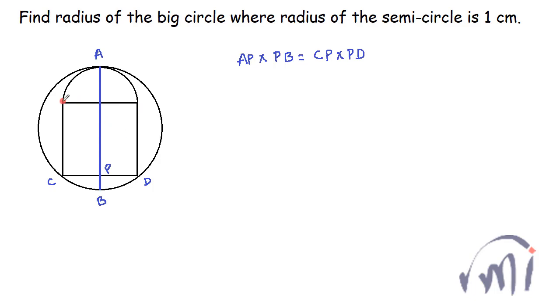And this is a square, this much is the radius of the circle and this much is also the radius of the circle. And since this is a square, CP will be equal to PD will be equal to 1. So AP, which is actually equal to 1 plus 2, which is 3, multiplied by PB will be equal to CP multiplied by PD. Or you can say PB will be equal to 1 divided by 3.